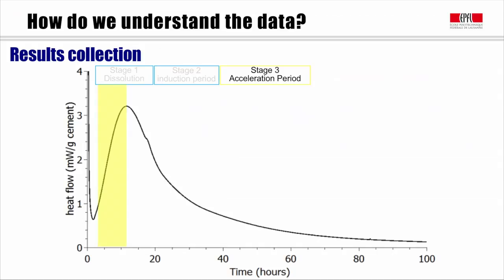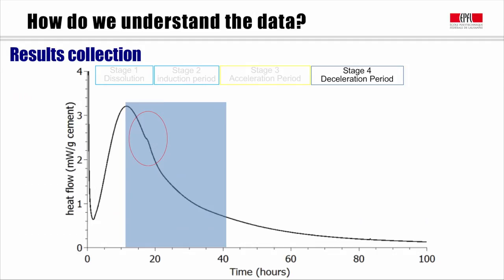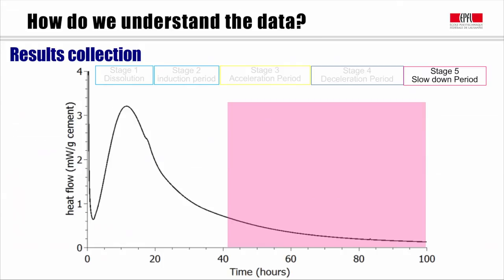The fourth stage is called deceleration period. In this period, heat flow rate starts to decrease. We can see a shoulder which represents the second reaction of aluminate. This one can be used for adjusting the amount of gypsum. The more gypsum we put inside, the later shows the aluminate peak. Sometimes people combine the fourth stage and fifth stage together, since during these stages, the heat flow is always decreasing.